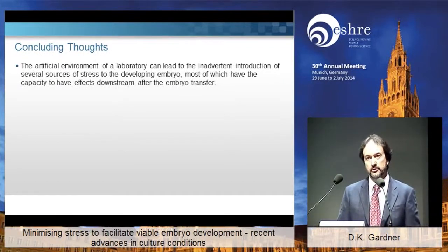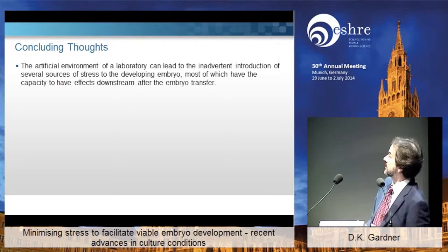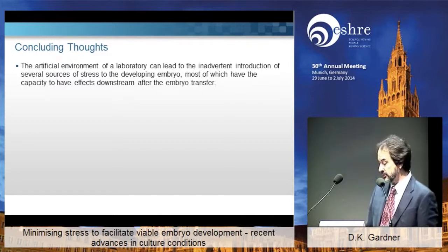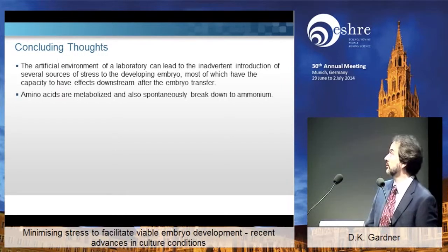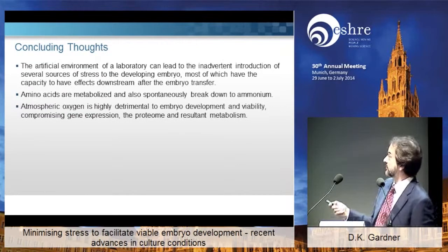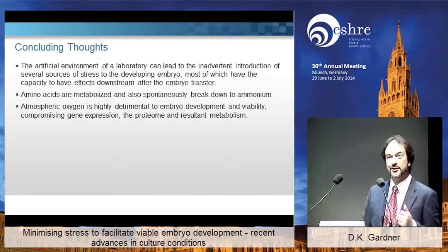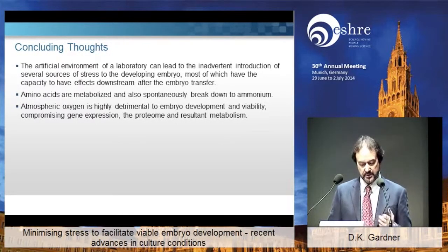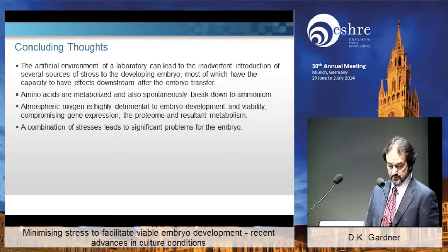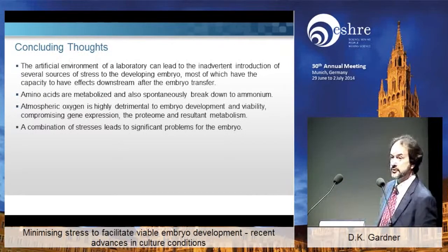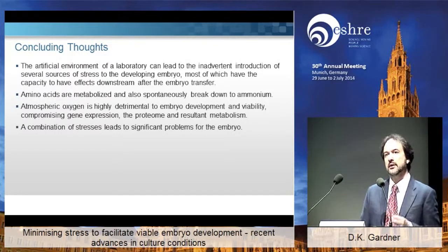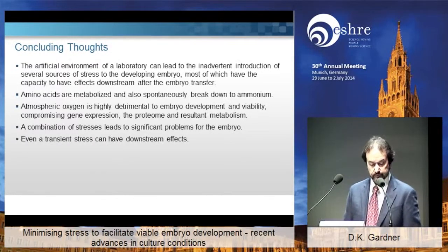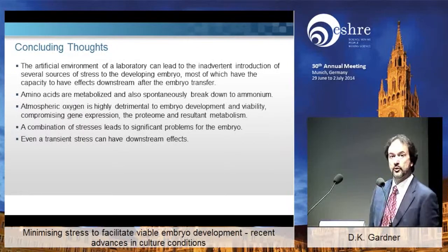Concluding thoughts: we work in an artificial environment — not in vivo — so by default we expose our gametes and embryos to various sorts of stresses, and most of these have the capacity to impact embryo development and can have downstream effects. We know that amino acids are not only metabolized but spontaneously break down to produce ammonium, and that should be taken into account. Atmospheric oxygen is highly detrimental to embryo development — it affects gene expression, the proteome, and the metabolism. There is an interaction between atmospheric oxygen and ammonium, so if ammonium starts to build up and you're concomitantly using 20% oxygen, that is really a recipe for disaster. Even transient stresses can have downstream effects, and IVF outcome is therefore a balance of these stresses.